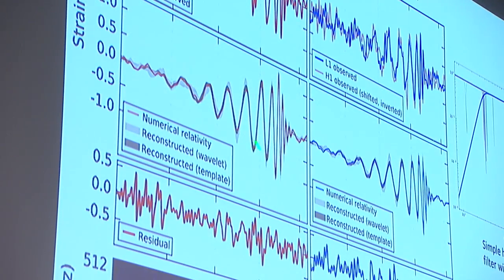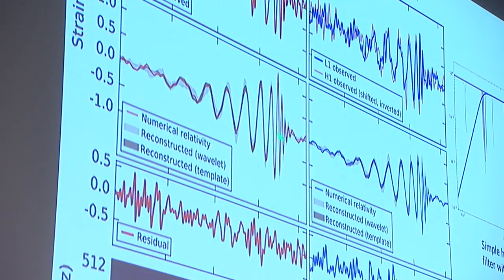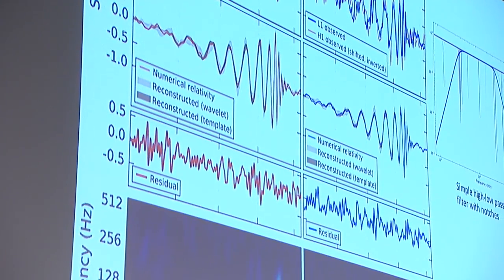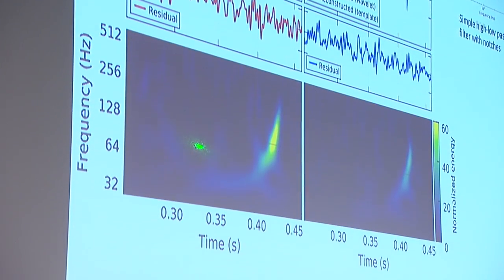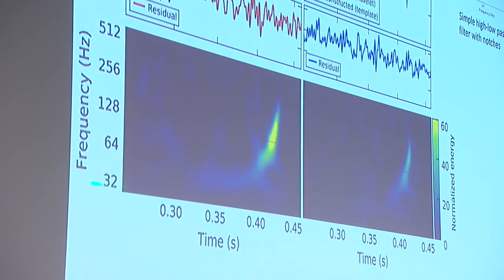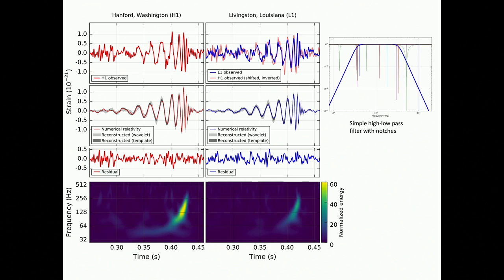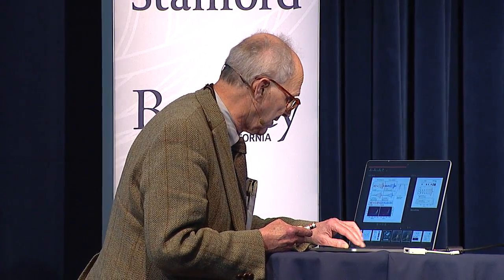The difference between what we saw and the predicted curve — once you know the parameters — is just the noise. Down here is a spectrogram representation showing how it appears as a function of frequency. The range of a piano is where this goes — the lowest note is a little over 32 Hz. It makes a chirp like this, and the brightest area is where the signal is loudest. Here is the one at Hanford and here at Livingston — and that is the discovery.